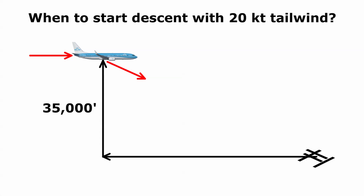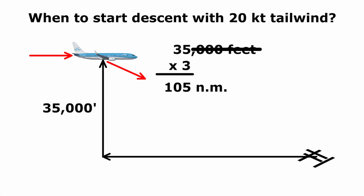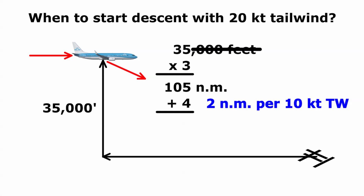Now, what if there's a tailwind at higher altitudes? Once again, suppose that we're coming to the end of the cruise at an altitude of 35,000 feet. This time, we expect to enjoy a 20 knot tailwind on the way down. The calculation starts off as before, with the TOD distance calculated at the rate of 3 nautical miles for each thousand feet of altitude. This time, we add a correction factor of 2 nautical miles for each 10 knots of tailwind. Since the tailwind is 20 knots, we would add 4 nautical miles to the descent distance. We would start the descent a little earlier than before, at 109 nautical miles out.